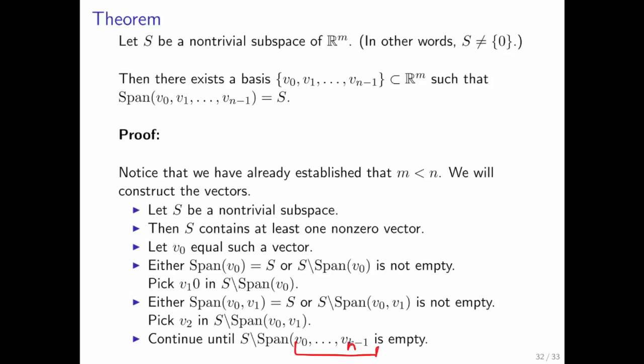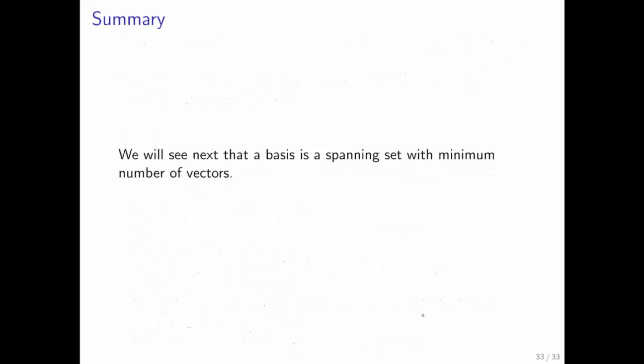And I guess that should be an n here. Anyway, you get the idea. What we're going to see next is that a basis is a spanning set with a minimum number of vectors. And indeed, if you have two different bases for the same subspace, then these bases have to have the same number of vectors in them.